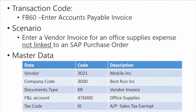Now we can get started with the first section on how to enter invoices, starting with the non-purchase order invoice. As discussed, this means the invoice is not linked to a purchase order. In order to enter this invoice, the transaction code is FB60, which is enter invoice specifically for accounts payable. In this scenario, we're going to have an invoice for office supplies — not linked to a purchase order, hence the different transaction.